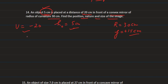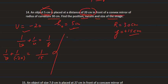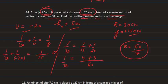Using the mirror formula 1/v + 1/u = 1/f, we substitute u = -20 and f = +15. So 1/v = 1/15 + 1/20. Taking LCM 60: (4 + 3)/60 = 7/60. Therefore v = 60/7 cm. The positive value confirms the image is formed behind the mirror.